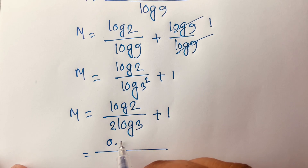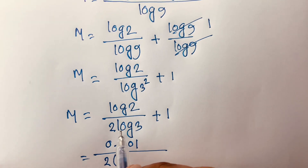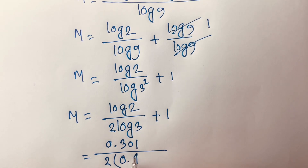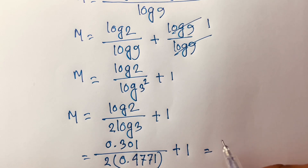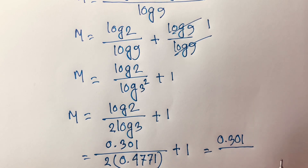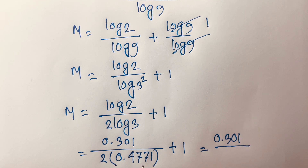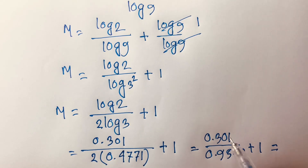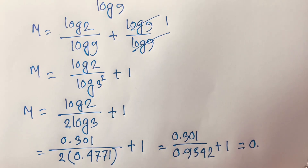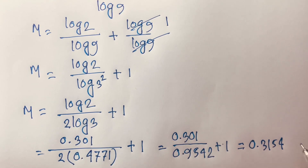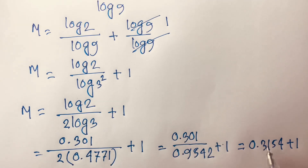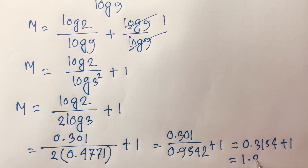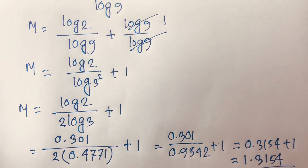Using the calculator: log 2 equals 0.301, and log 3 equals 0.4771, so 2 times log 3 equals 0.9542. Therefore m equals 0.301 divided by 0.9542 plus 1, which gives 0.3154 plus 1, equaling approximately 1.3154.